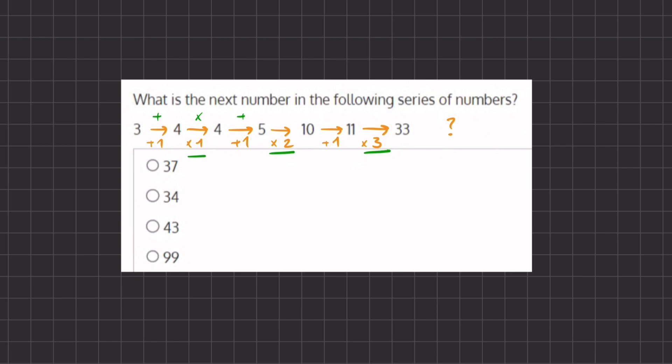So if our last transition was multiplication, our next transition should be addition. And our addition stays constant at 1, so we just have to add 1 to 33, and we get 34, which will complete the next number in the series of numbers and corresponds to answer B.